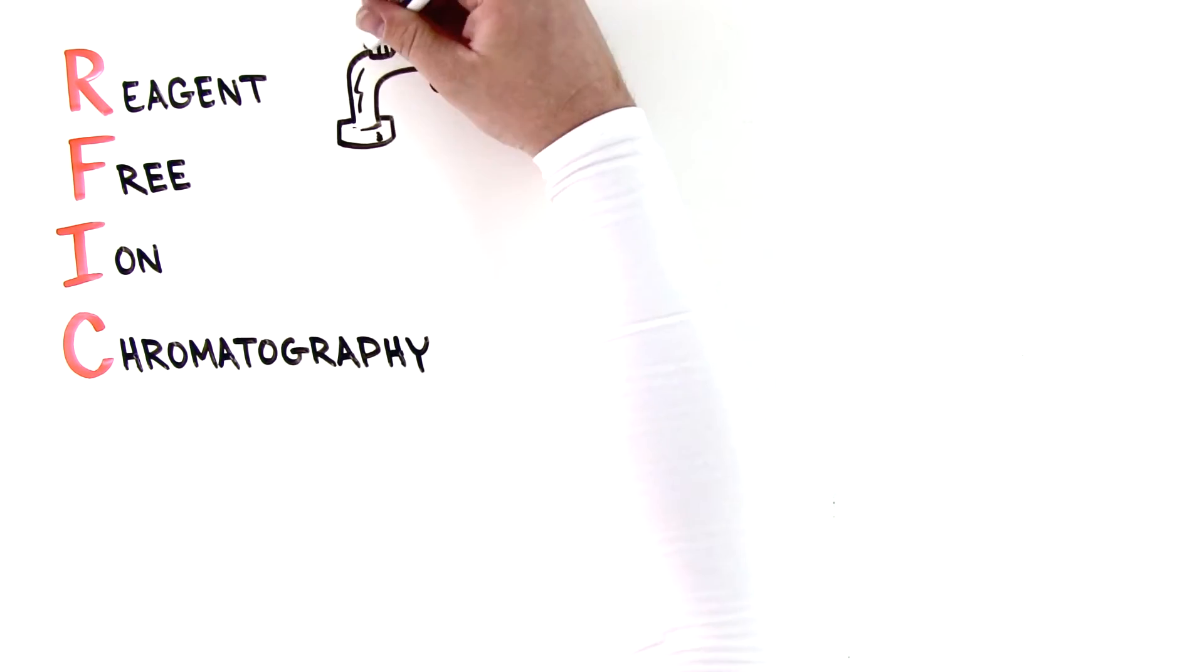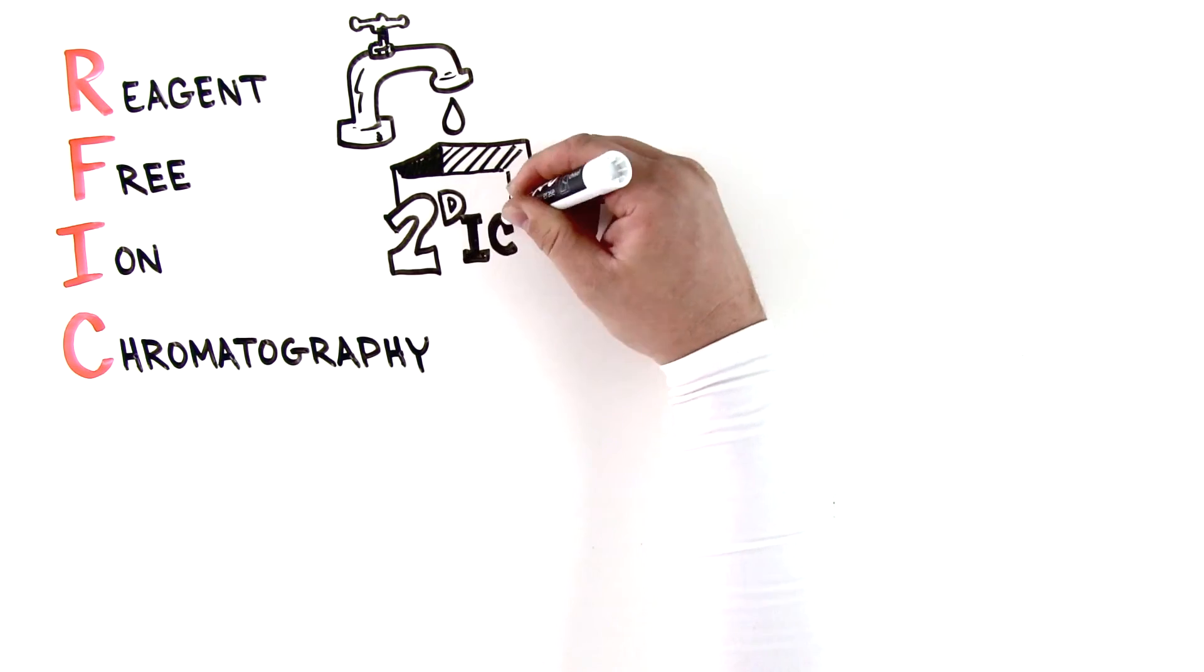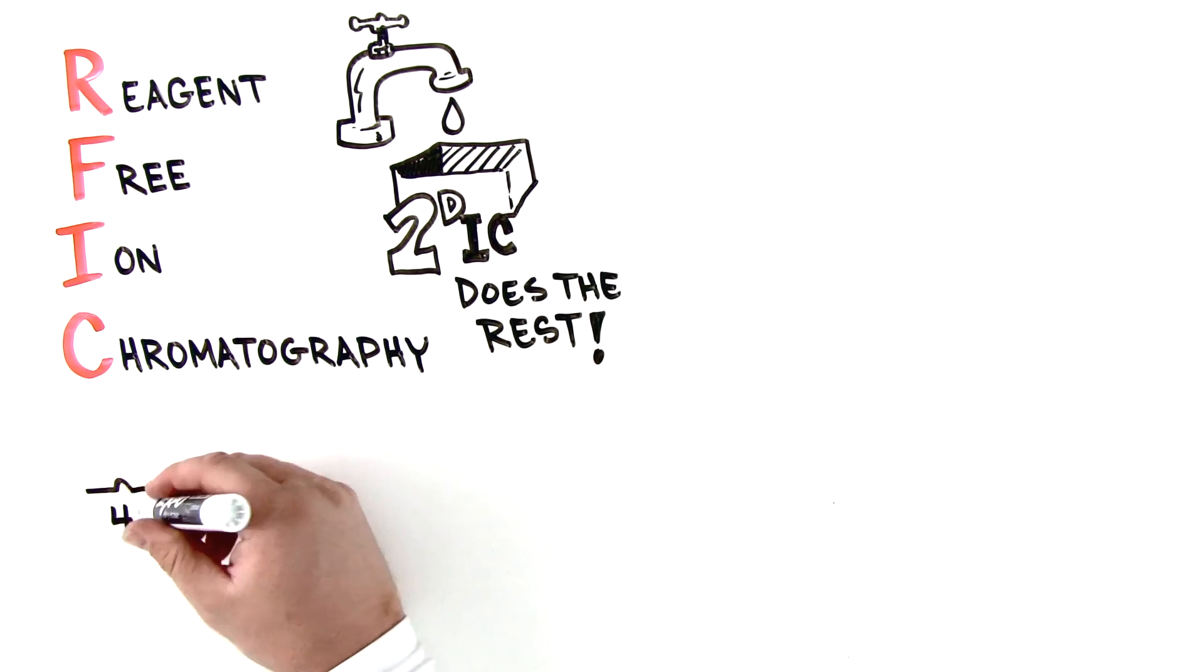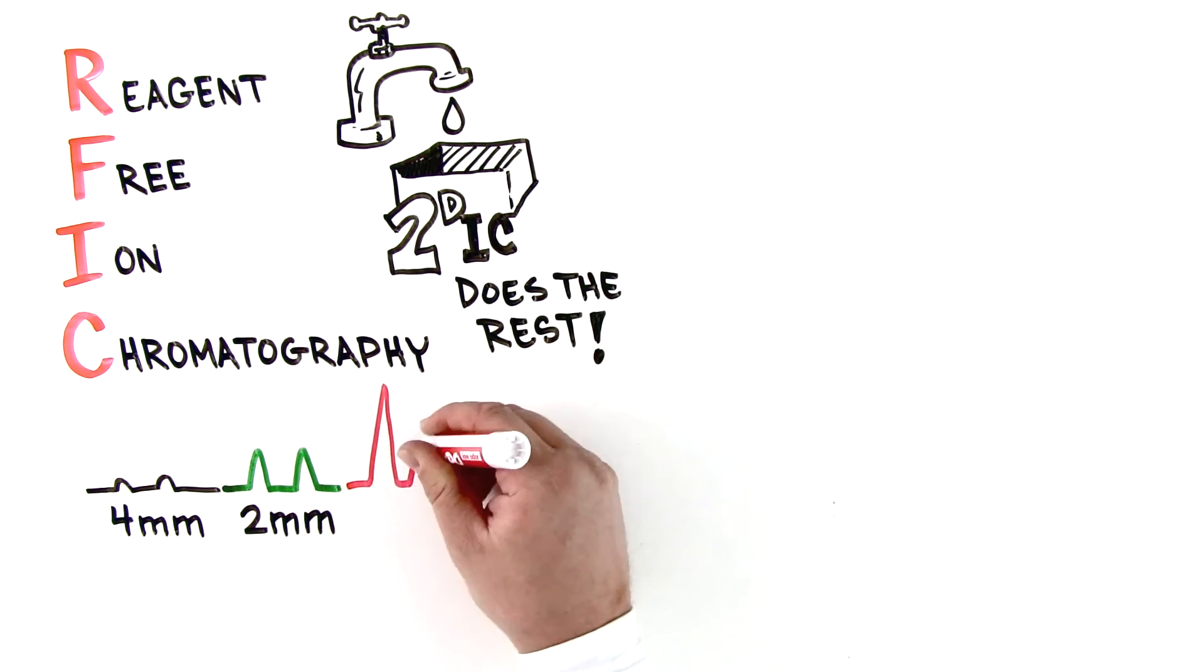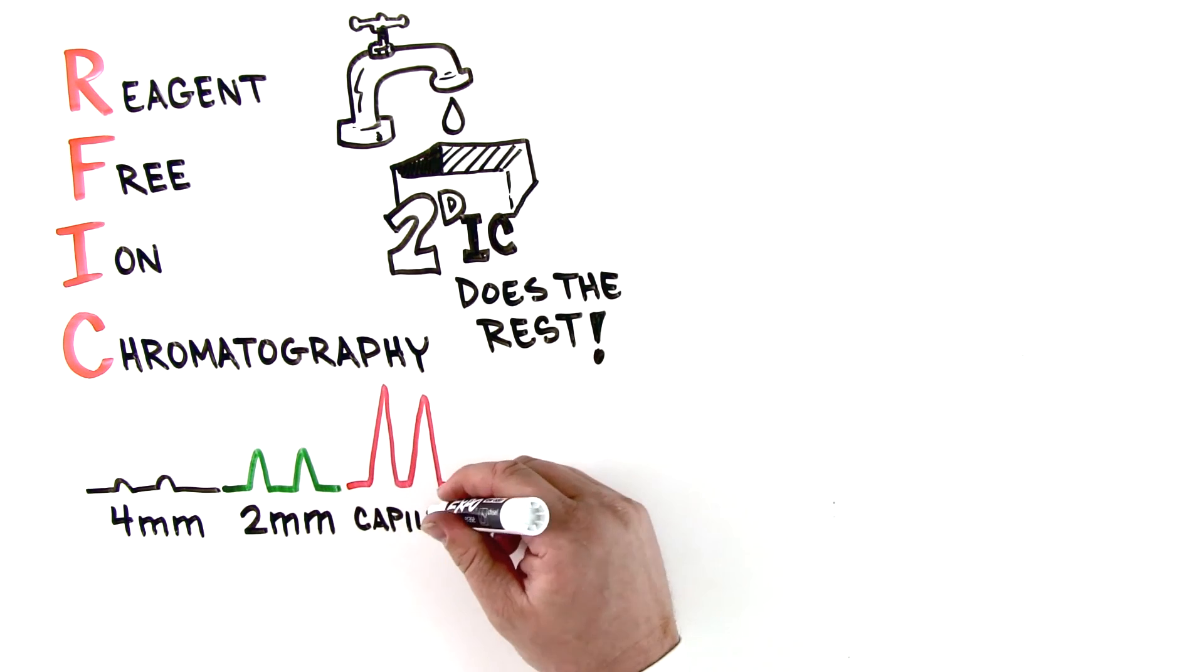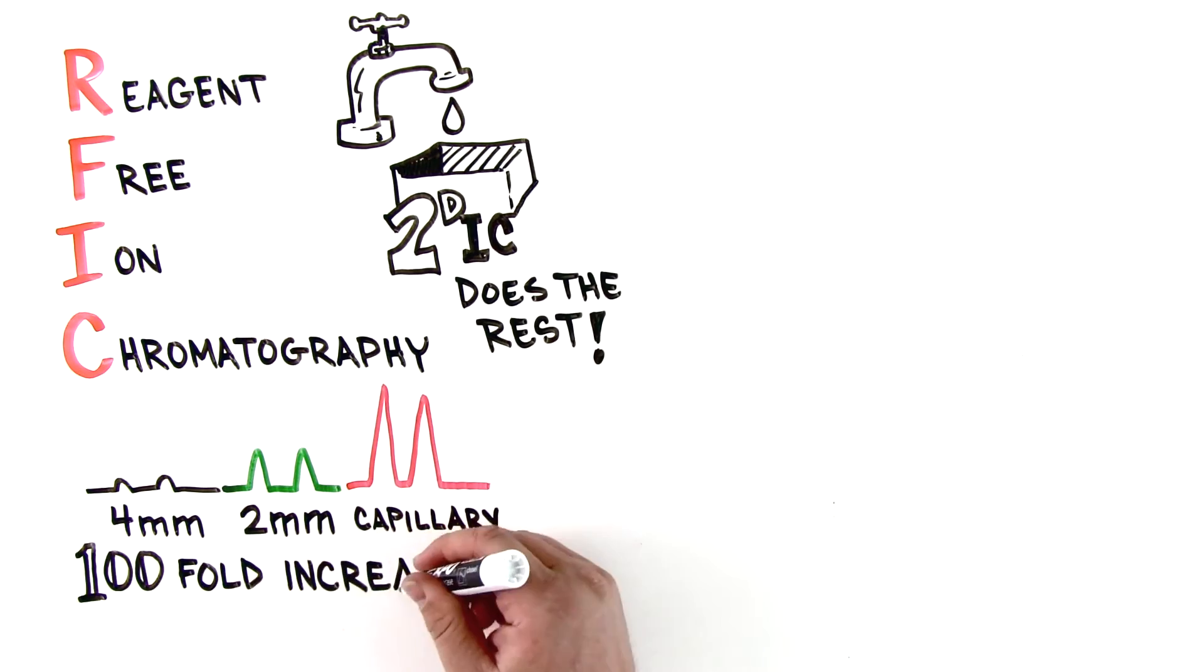Simply add deionized water to the systems, and 2DIC does the rest. With a standard 4 mm system in the first dimension coupled with a 0.4 mm capillary IC in the second, RFIC systems can increase sensitivity up to 100 fold.